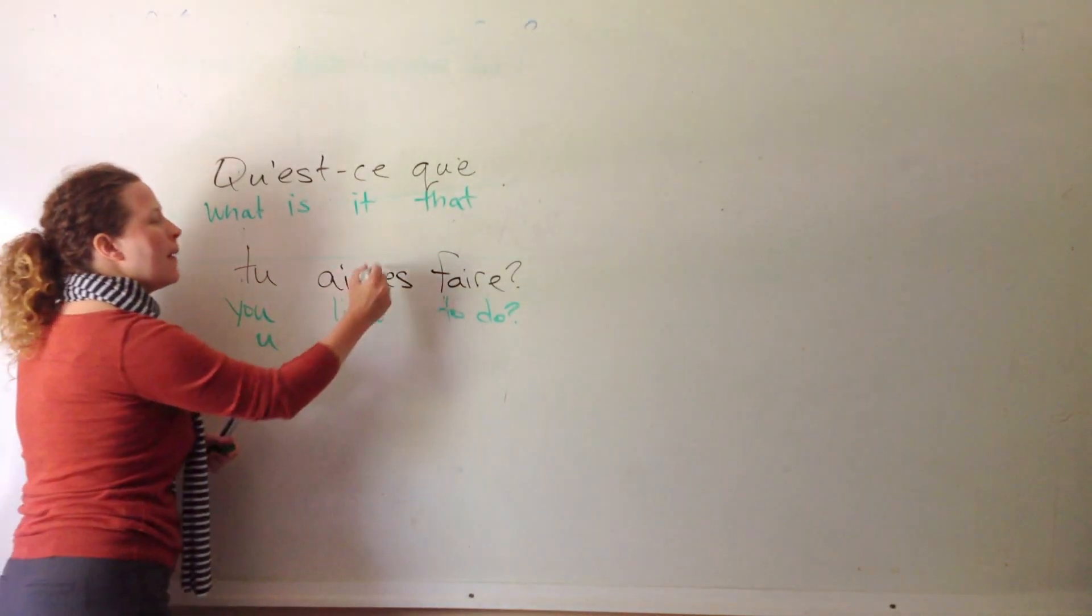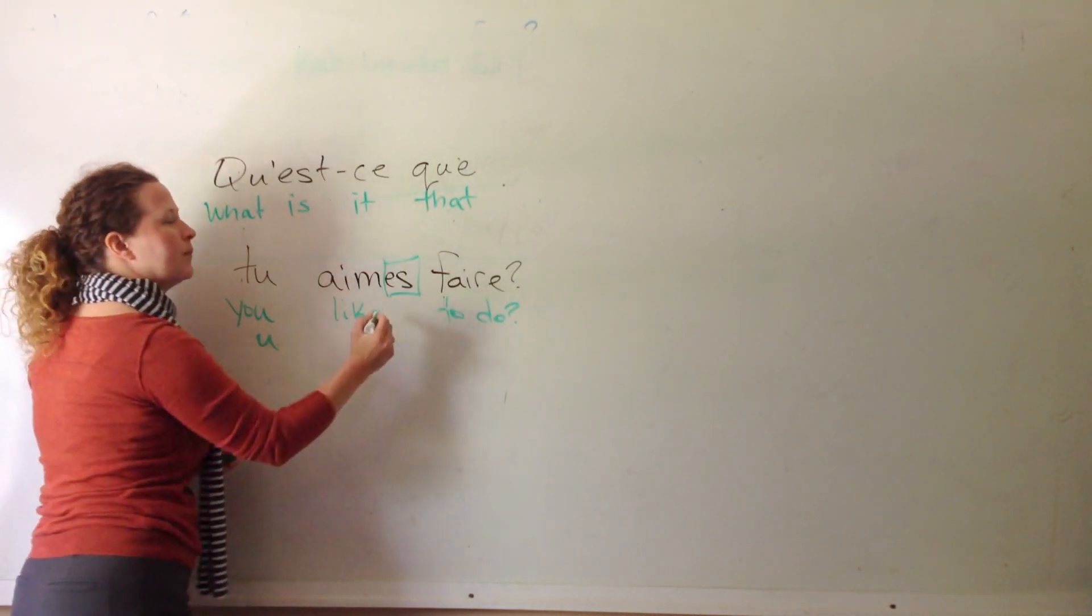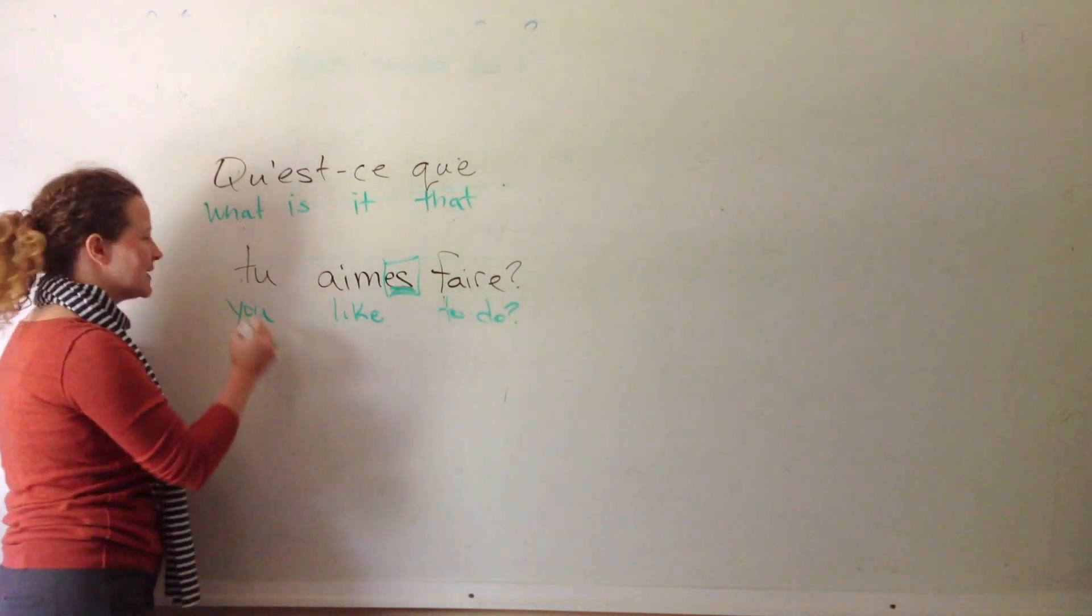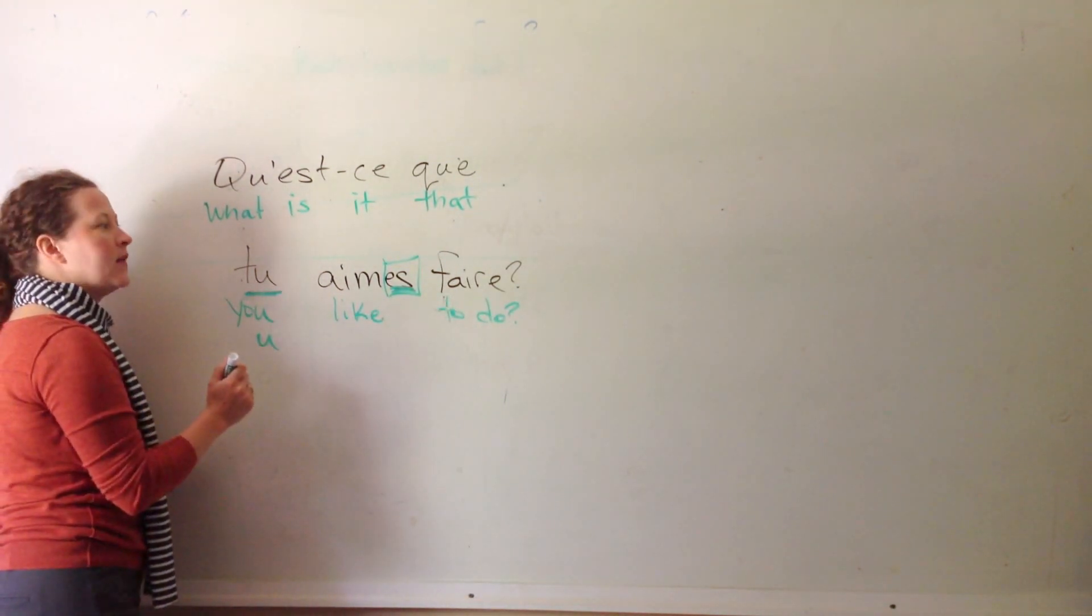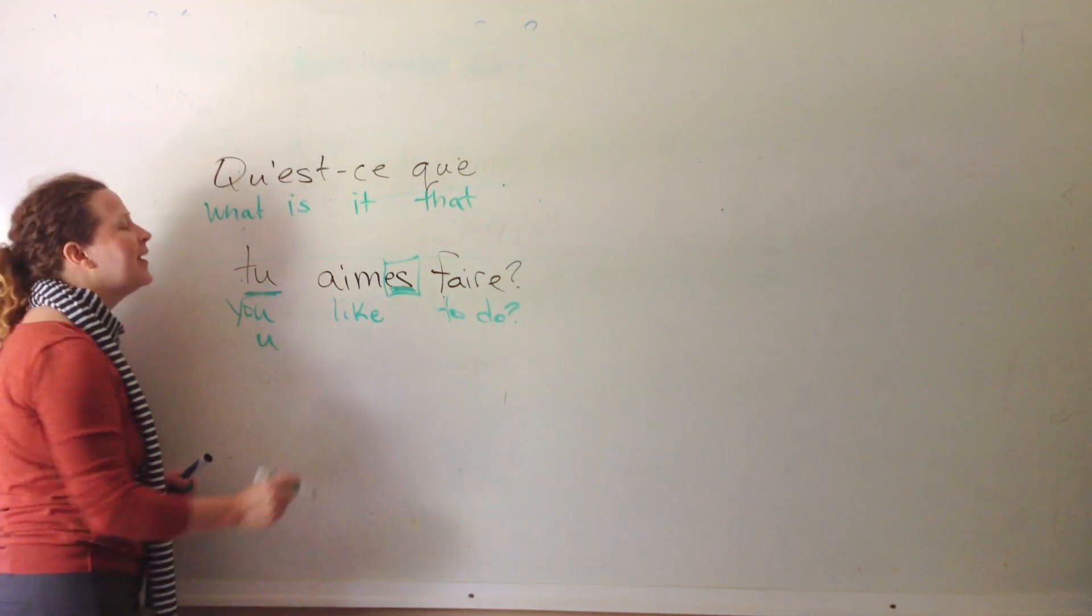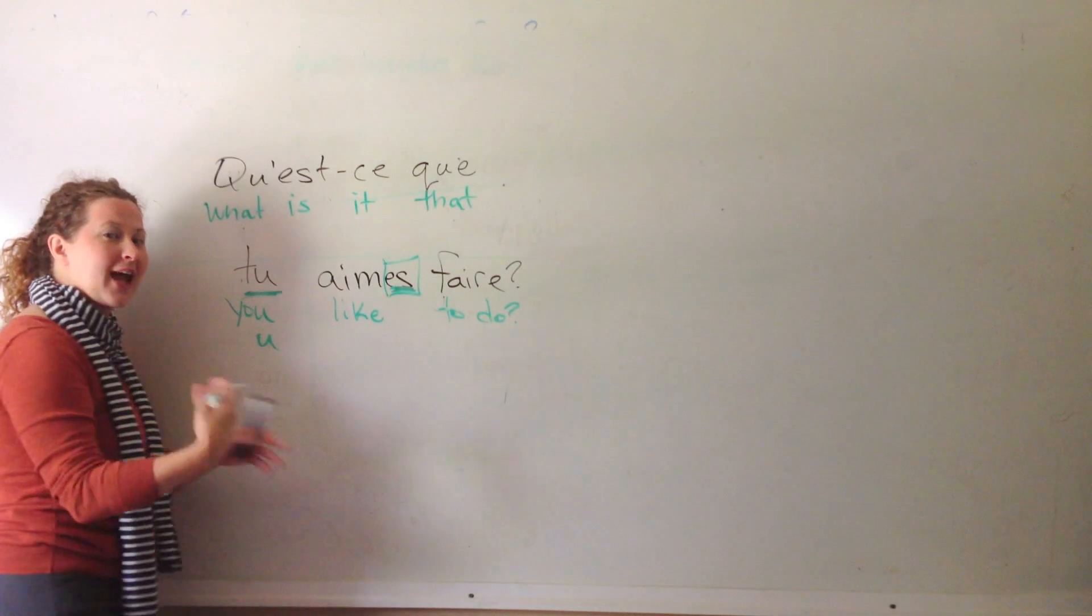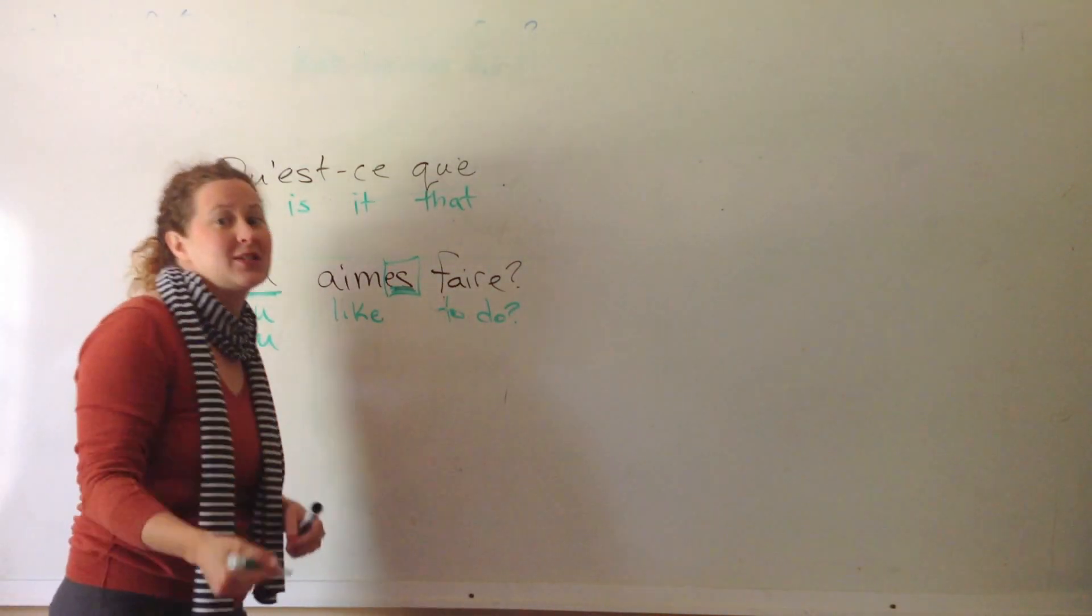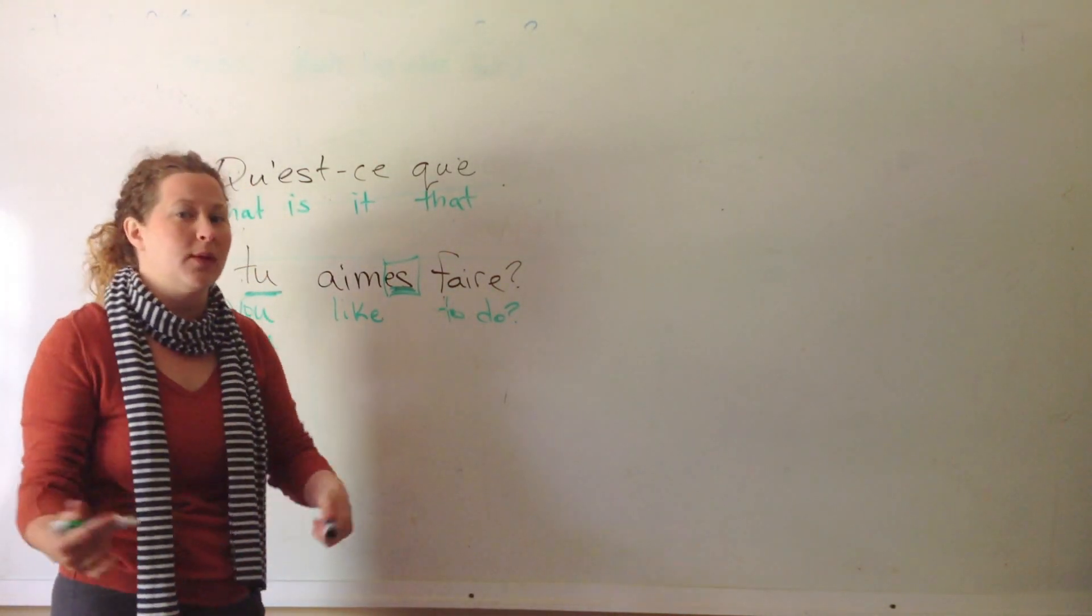So, aimes is a conjugated verb. You will only ever see aimes with tu. And this is a conjugated er verb. This will all make sense in a little while. And this is conjugated. This means that I can use this with anything. I like to do this. You like to do this. Blah, blah, blah.